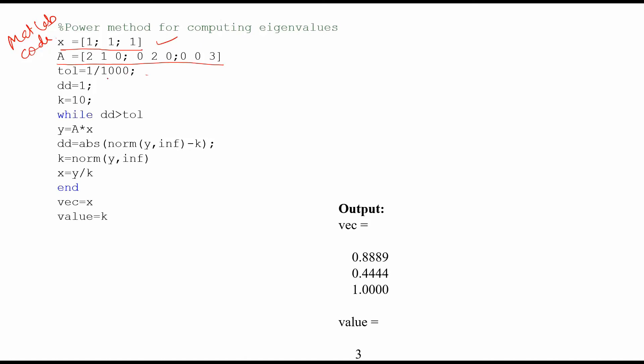Now you have given a tolerance that will determine when to stop - whenever the previous answer and the current answer differ by less than this, then come out of the loop. You have started your iteration, you have given dd as this and initialized k equal to 10. This is done only to start the while loop.